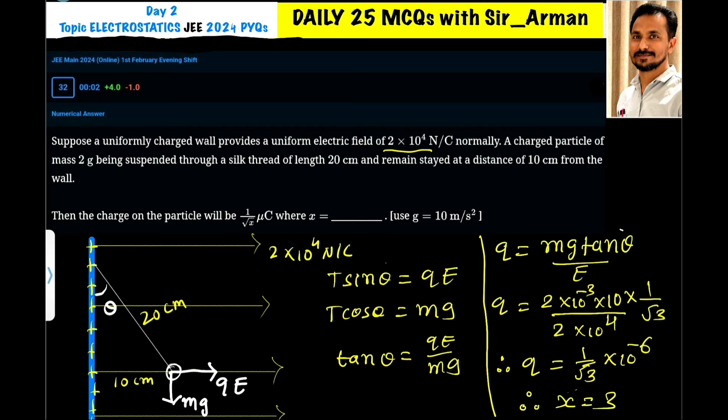To find the value of tan θ, either you can use tan θ equals opposite by adjacent, or there is another equation. If you see here, sine θ equals opposite by hypotenuse.